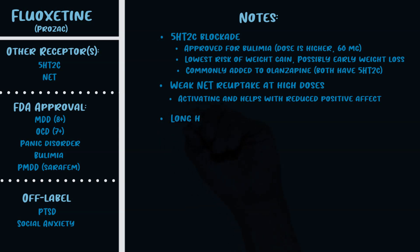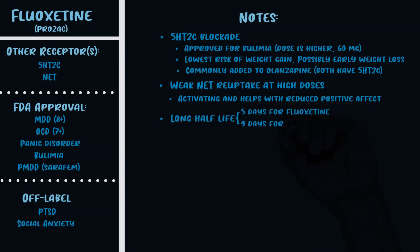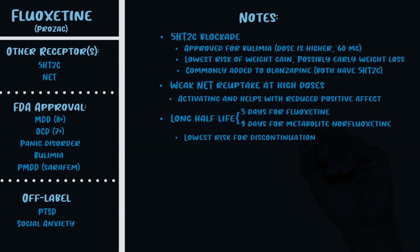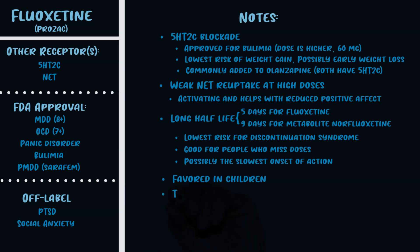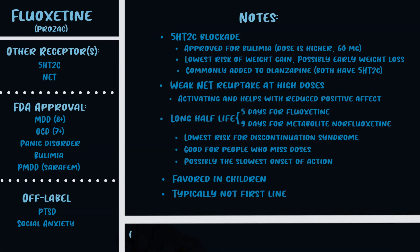Prozac has a long half-life: five days for fluoxetine and nine days for its metabolite norfluoxetine. This gives it the lowest risk of discontinuation syndrome since it has a naturally built-in taper. This makes it particularly good for patients who miss doses. The long half-life also suggests it may have the slowest onset of action. Prozac is favored in children — it's the only antidepressant approved for kids eight and older. However, it didn't do as well in the Cipriani meta-analysis and it has drug interactions as a potent CYP inhibitor at several CYP enzymes.